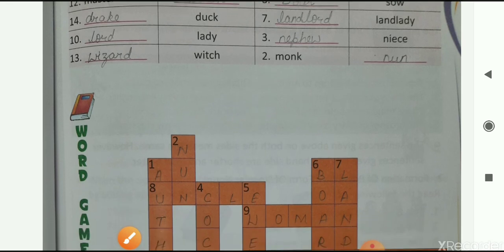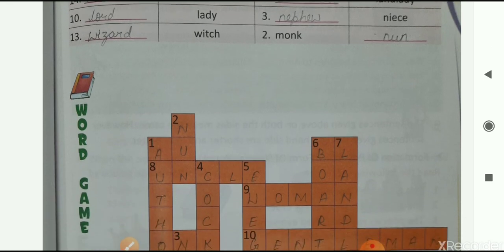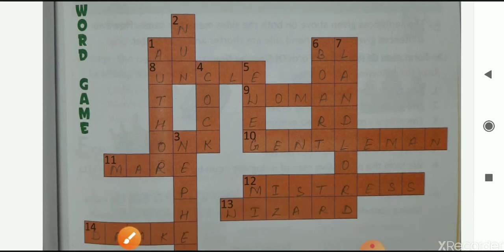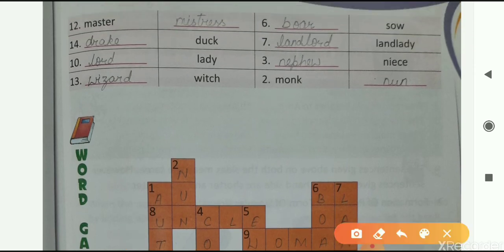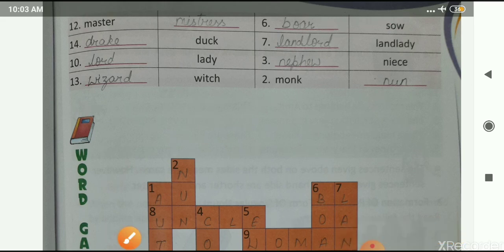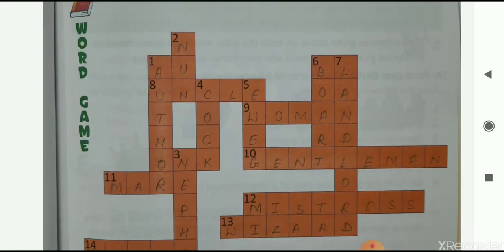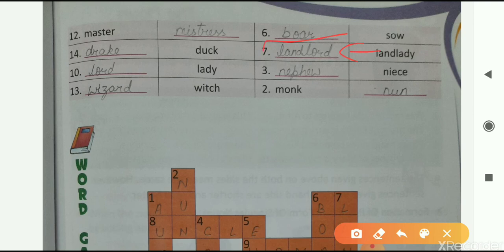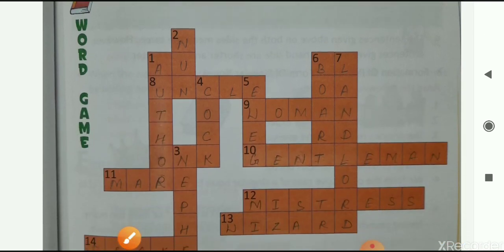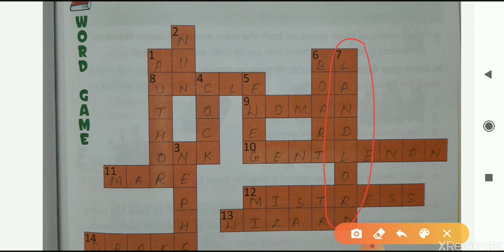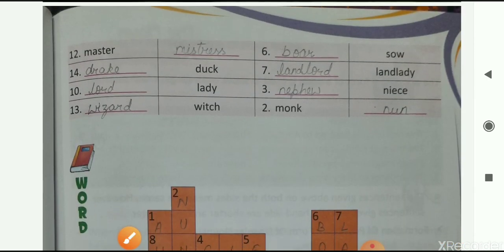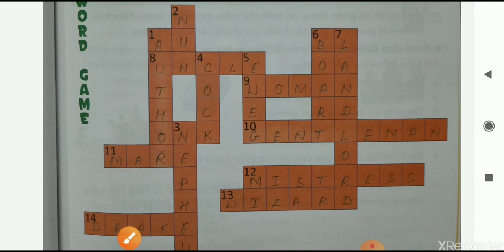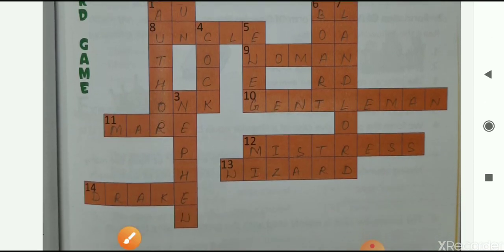The next one is witch. Masculine of witch is wizard. So write wizard on number 13, W-I-Z-A-R-D. The next one is sow on number 6. Write boar. Because masculine of sow is boar, B-O-A-R on number 6. Next one is landlady. Masculine of landlady is landlord. So write landlord on number 7. Then next one is niece. Masculine of niece is nephew. So write nephew on number 3, N-E-P-H-E-W, nephew.